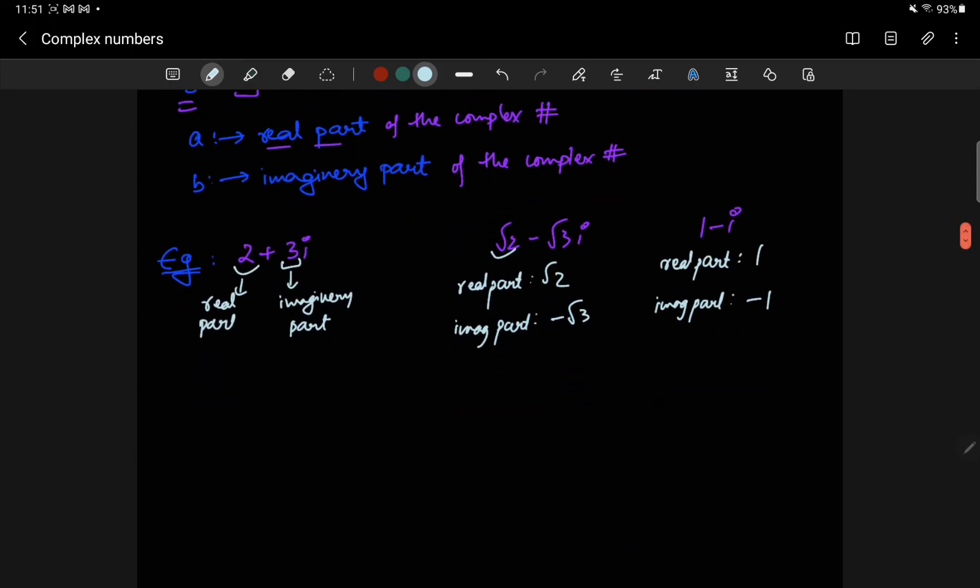Now, similarly, any real number, if you take any real number, say you take 13, I can write 13 as 13 plus 0i, which means that it has a real part that is equal to 13, and an imaginary part that is equal to 0.